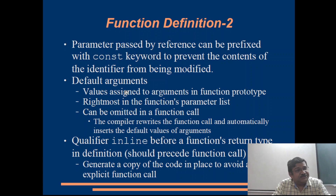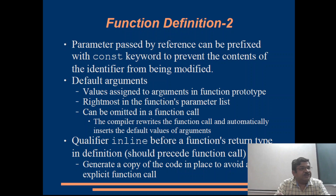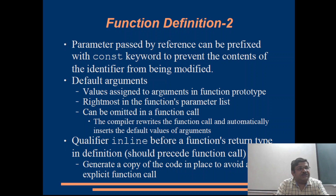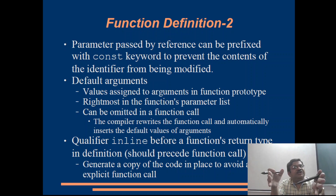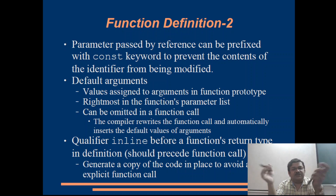Functions can also have default arguments. If we do not pass any arguments, the function can work on its own default arguments. These default values are defined in the function prototype itself — at the time of declaring the arguments we initialize them, so that if no argument is passed, the function will be called with these default values.